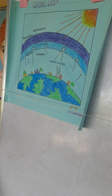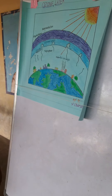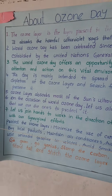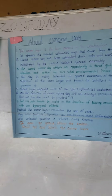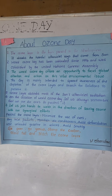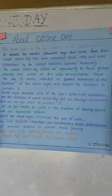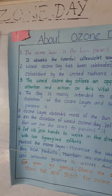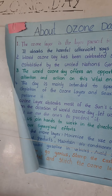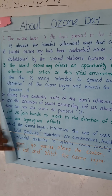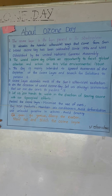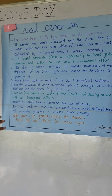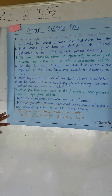If you pollute the nature, the ozone layer gets destroyed and ultraviolet radiations reach the earth, causing skin cancers, blindness, and other diseases. World Ozone Day offers an opportunity to focus global attention and action on these vital environmental issues. The day is mainly intended to spread awareness of the depletion of the ozone layer and search for solutions to prevent it.